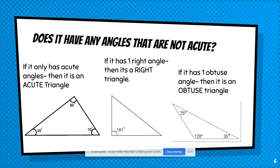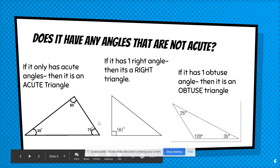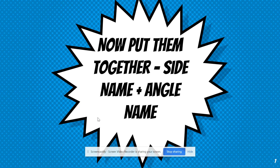So to summarize sides and angles: for sides, ask yourself — does it have any sides that are the same length? For angles, ask yourself — does it have any angles that are not acute? If you can answer those two questions, you'll be able to give the triangle both of its names.